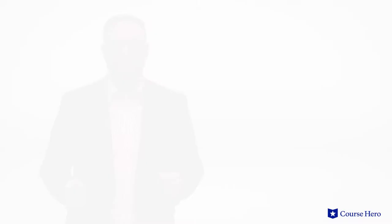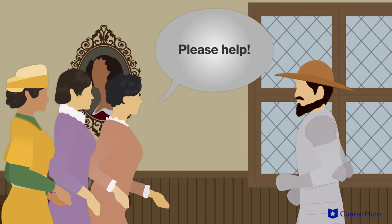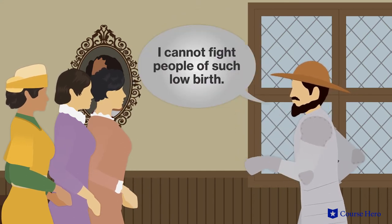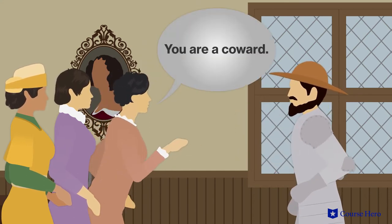Meanwhile, two customers try to sneak out of the inn without paying and beat Juan Palomique within an inch of his life. The women of the household beg Don Quixote to help, but he says that he cannot fight people of such low birth. The women call him a coward.